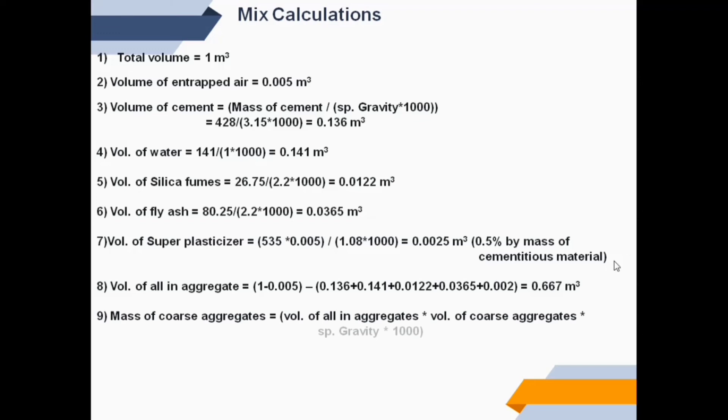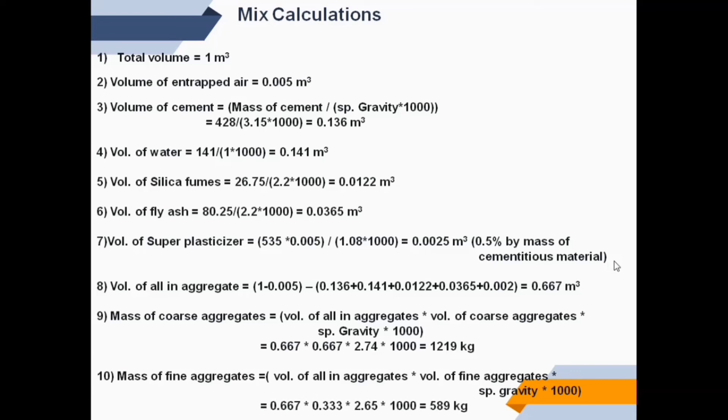Mass of coarse aggregates equals volume of all-in aggregates multiplied by volume of coarse aggregates multiplied by specific gravity multiplied by 1000. Therefore, mass of coarse aggregates equals 1219 kilograms. Mass of fine aggregates is calculated as volume of all-in aggregates multiplied by volume of fine aggregates multiplied by specific gravity multiplied by 1000. Mass of fine aggregates obtained as 589 kilograms.